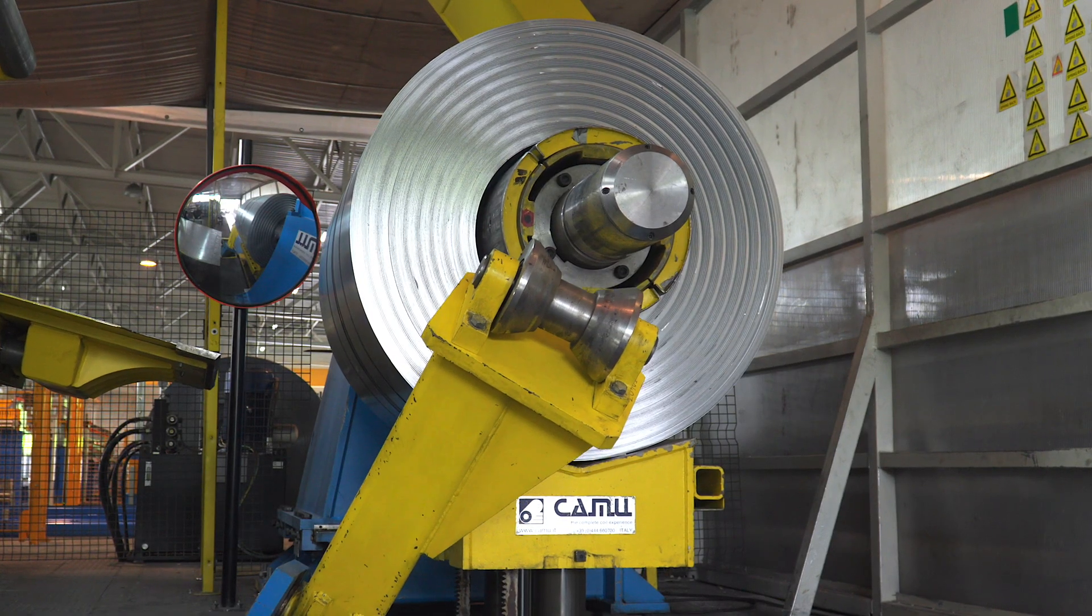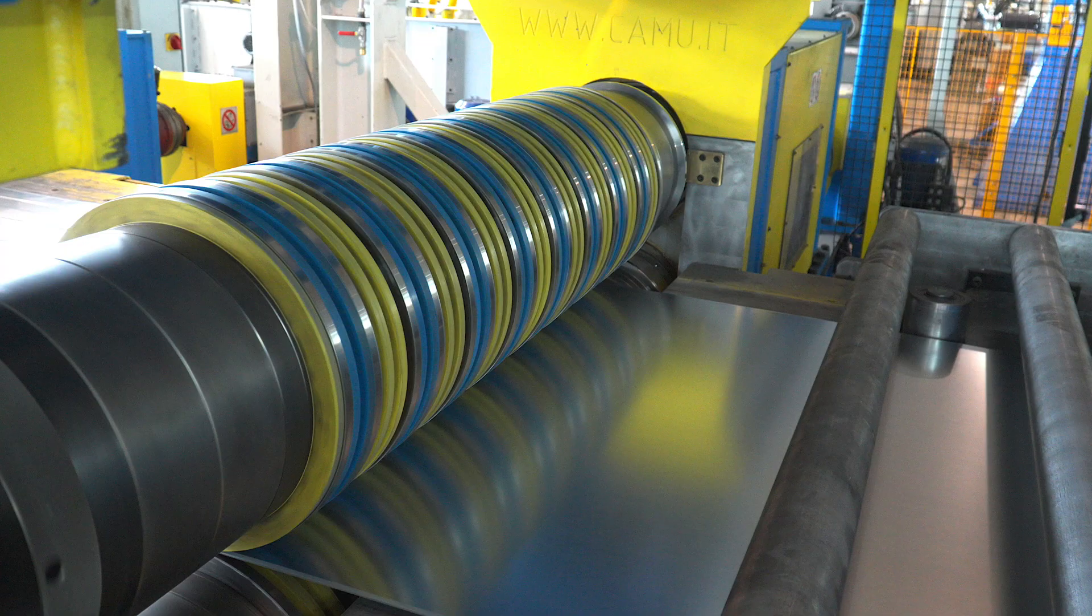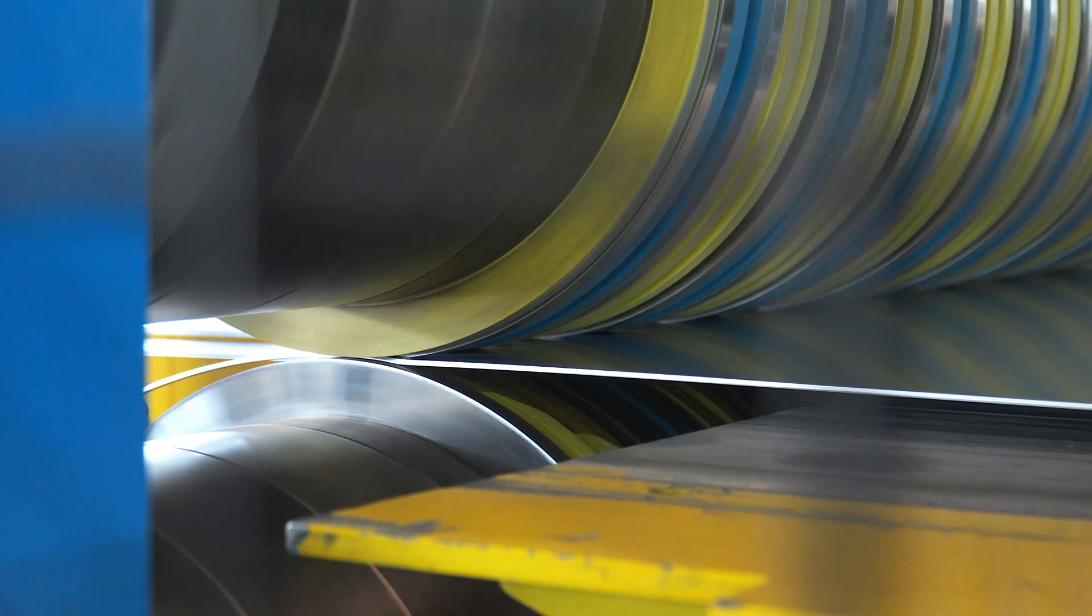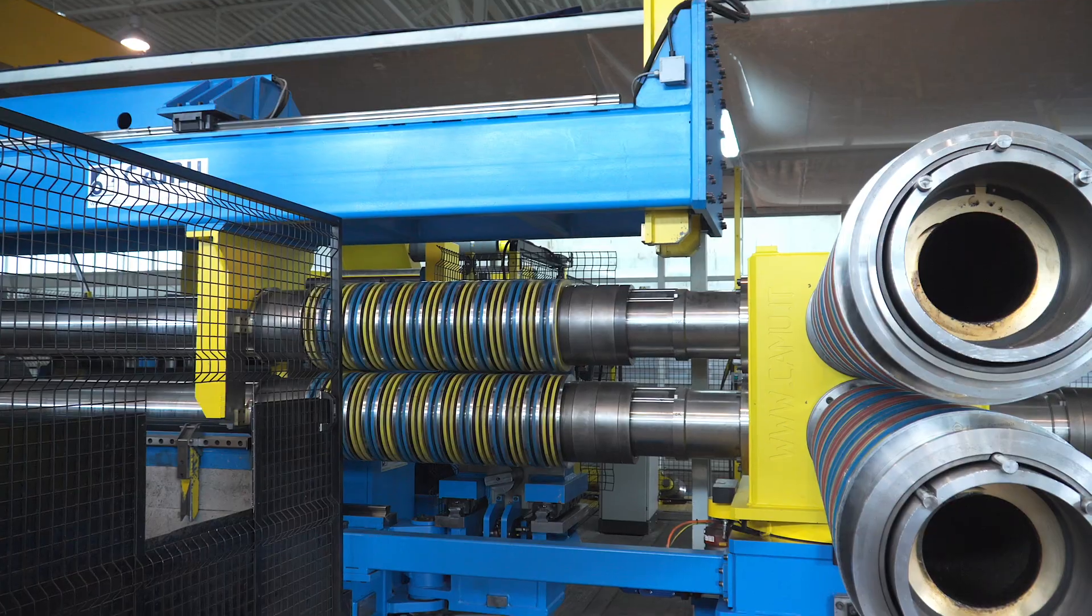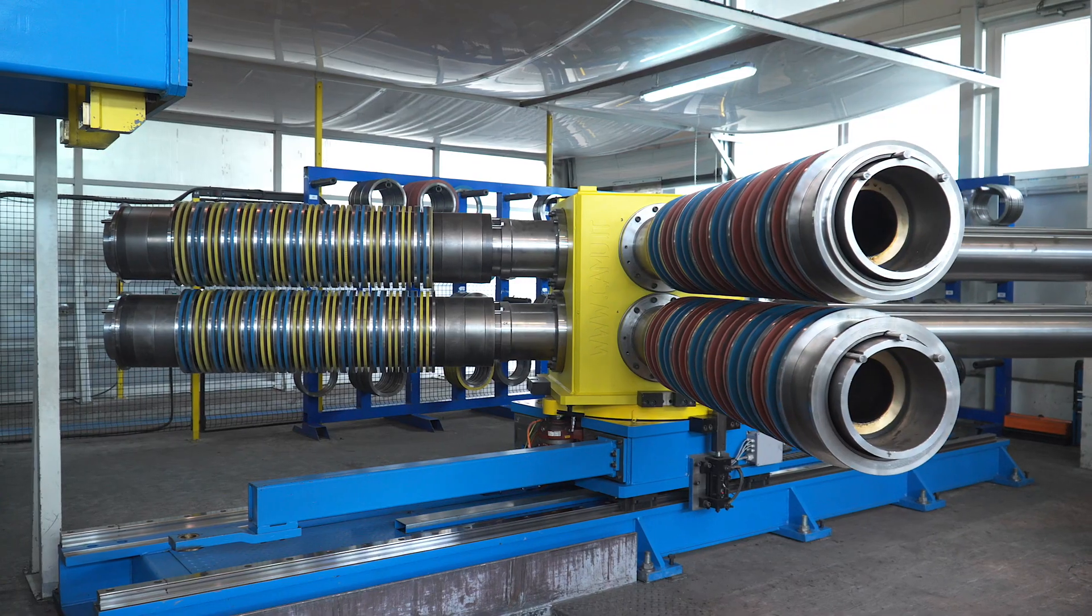The coils are first loaded onto a decoiler, then the sheet is automatically dragged to a section of knives that cut it into strips.